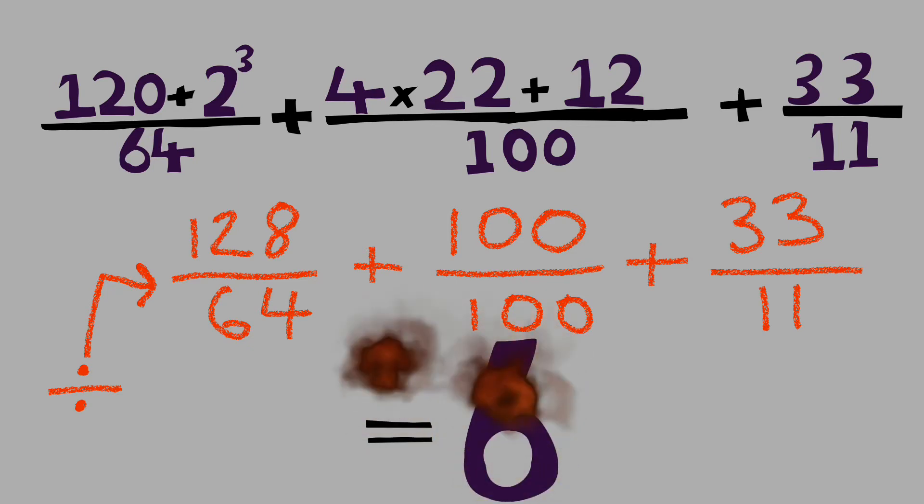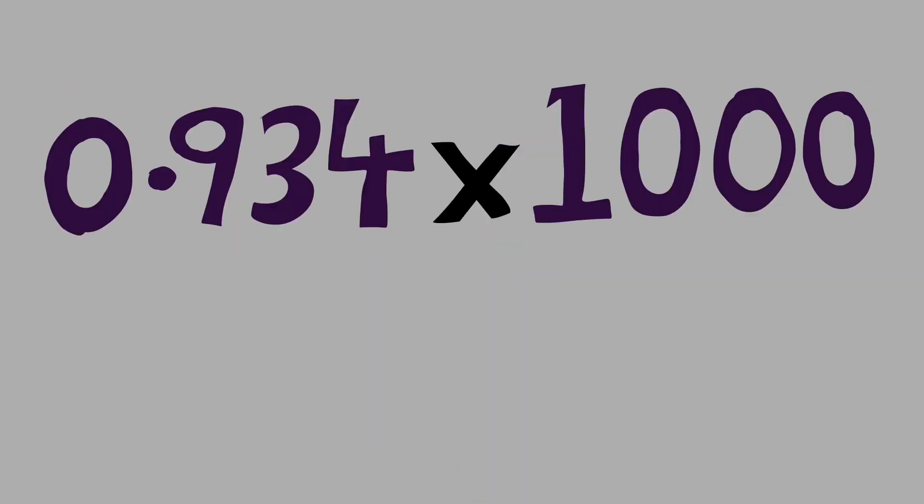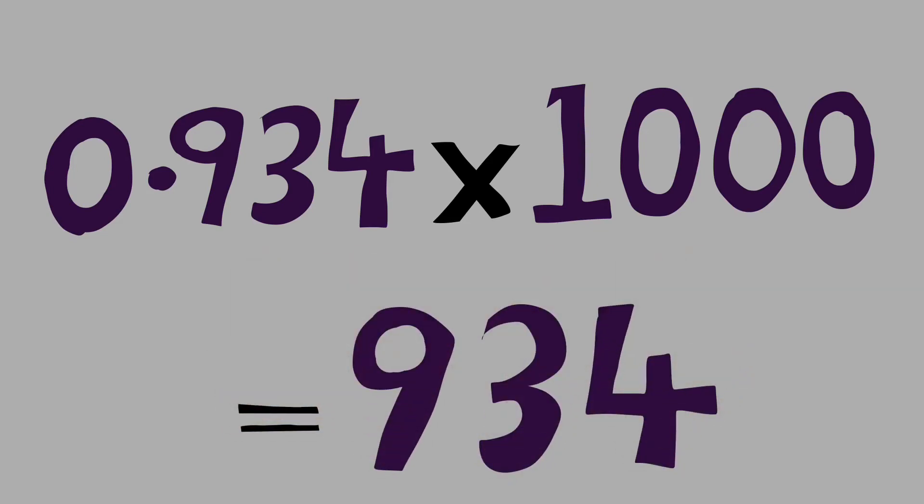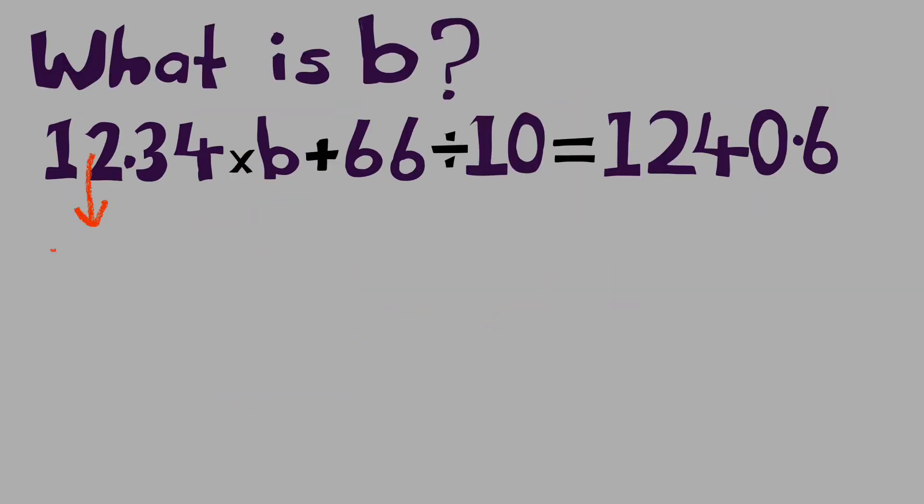0.934 times a thousand. Move the decimal point: 934.